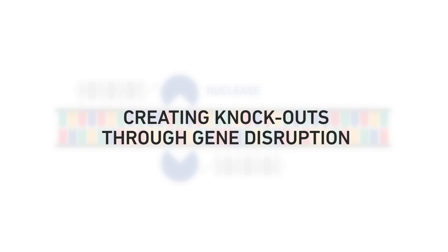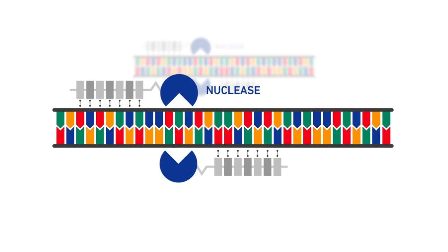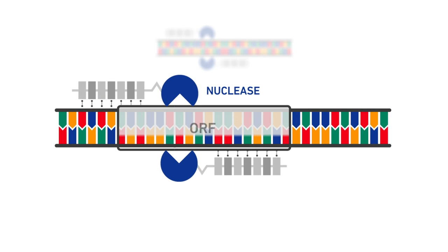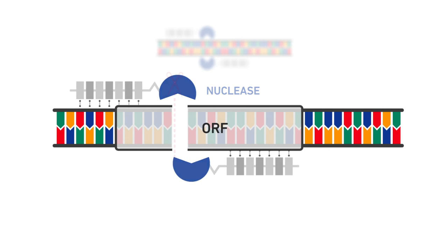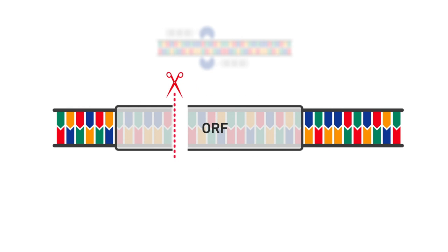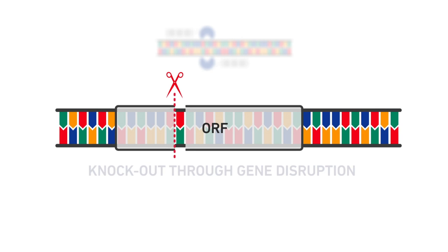With this technique, you can create gene knockouts. The DNA ends formed by the cleavage are repaired by the cell, often leaving deletions or small insertions. In these cases, two-thirds of the repair events would alter the reading frame of a gene and create a knockout.